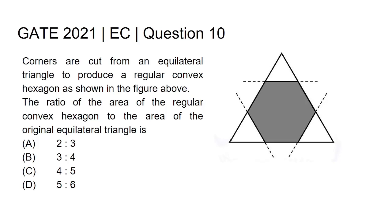The question is: corners are cut from an equilateral triangle to produce a regular convex hexagon as shown in the figure. The ratio of the area of the regular convex hexagon to the area of the original equilateral triangle is — option A: 2 is to 3, option B: 3 is to 4, option C: 4 is to 5, option D: 5 is to 6.